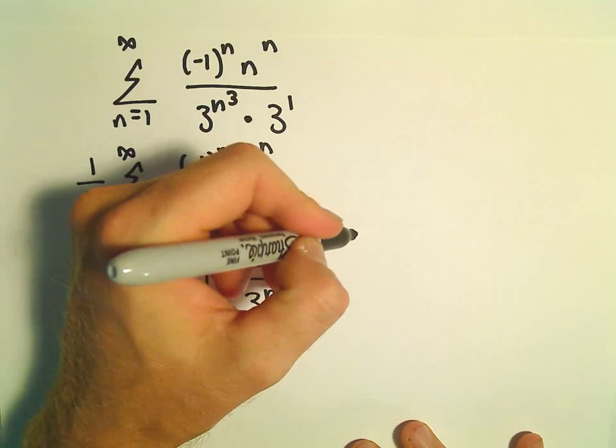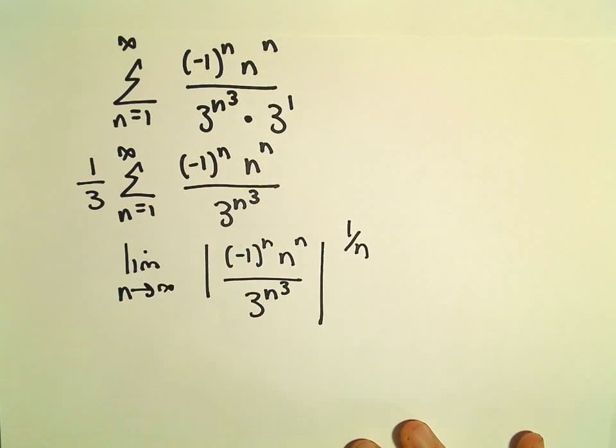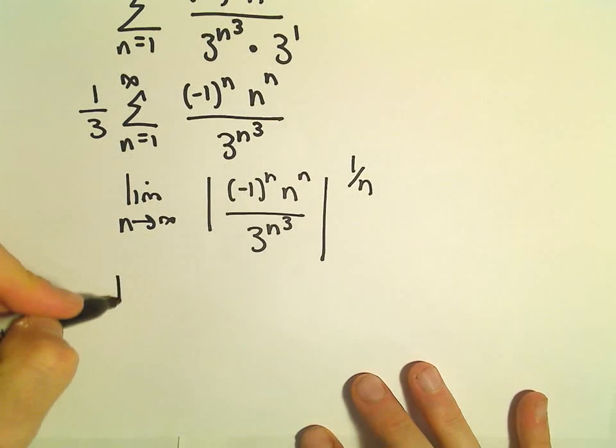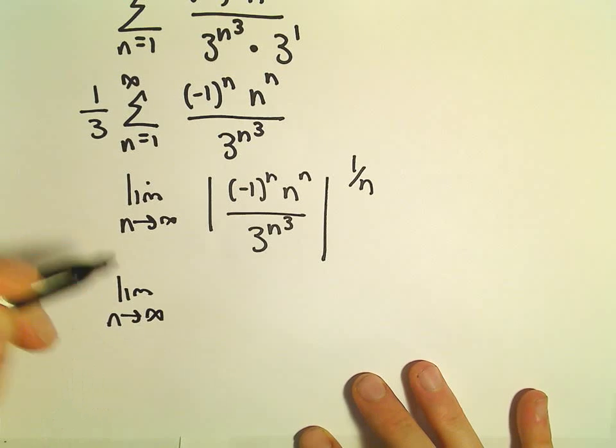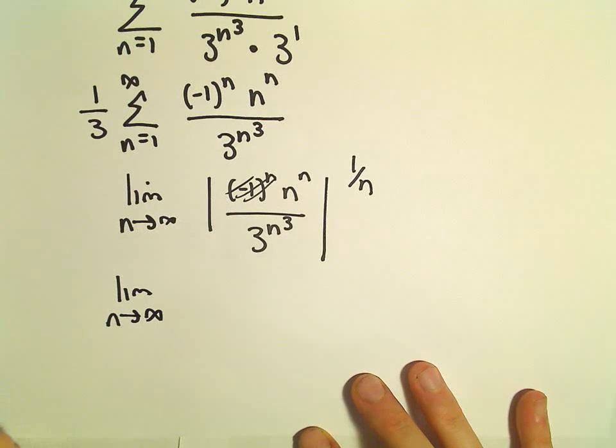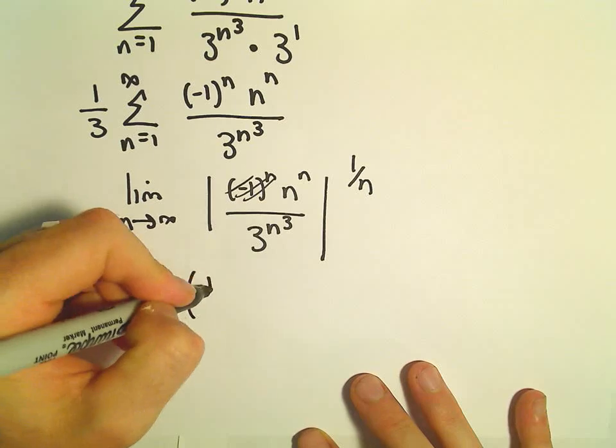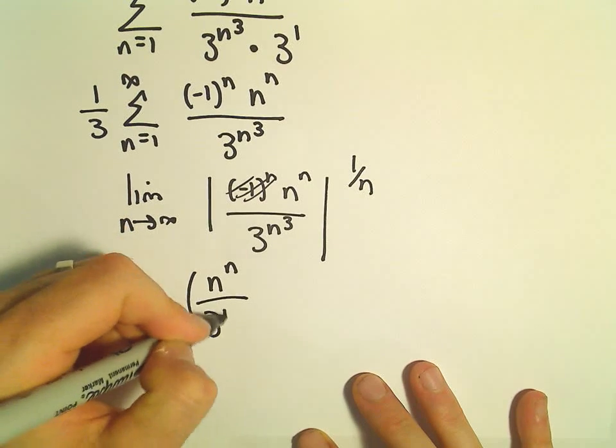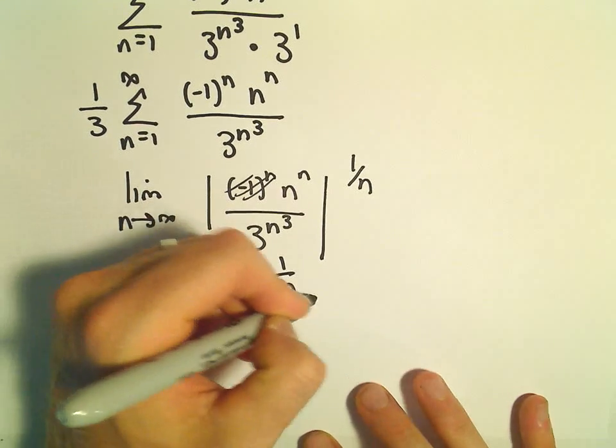Again, the nth root, we'll take that to the 1 over n power. Well, when we take the absolute value, the only thing that would happen is the negative 1 to the n would be gone. So we would have n to the n over 3 to the n cubed raised to the 1 over n.